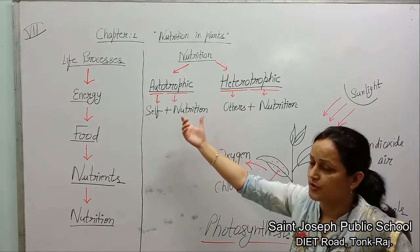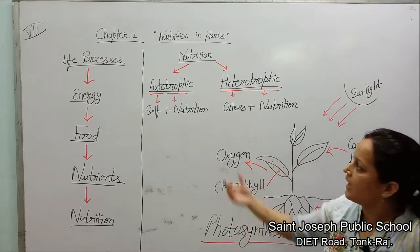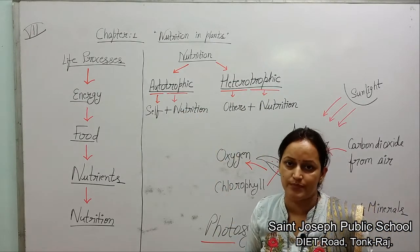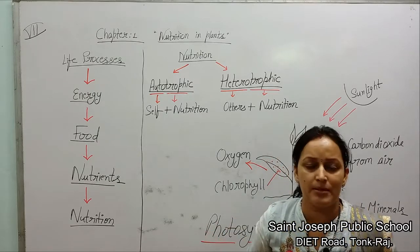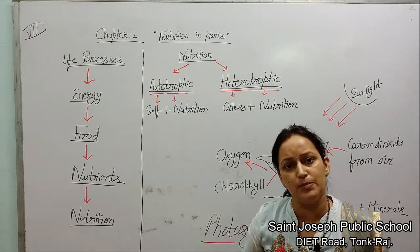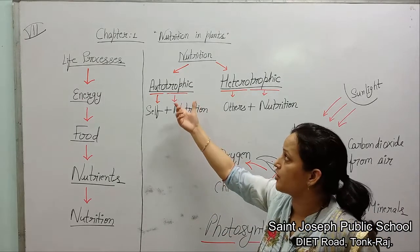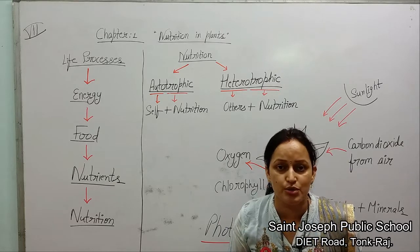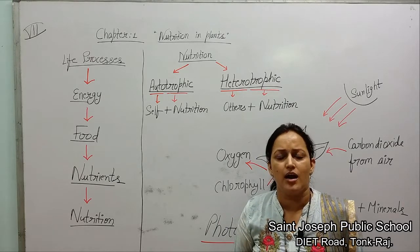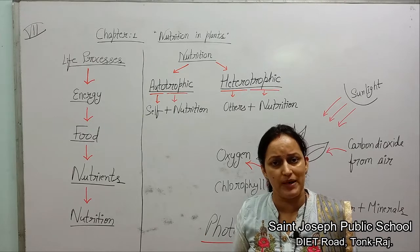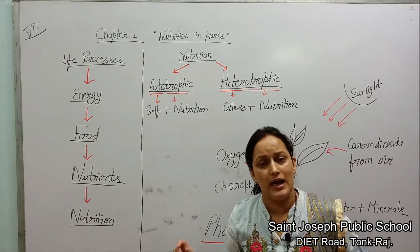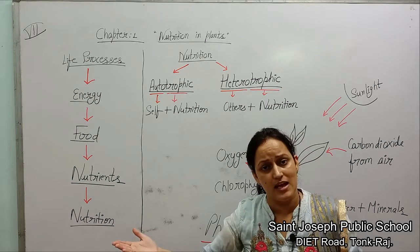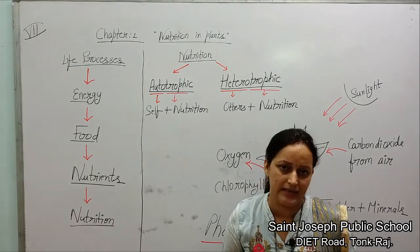Now let's come back to autotrophic nutrition. The organisms, the living beings, which make their own food and show autotrophic nutrition, are called autotrophs. We can also call them producers, because they are producing food by themselves — for themselves and for us also.